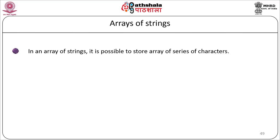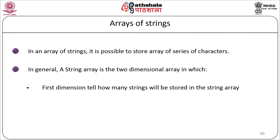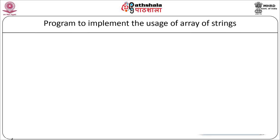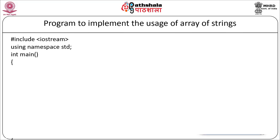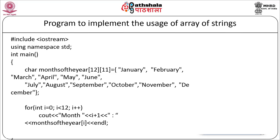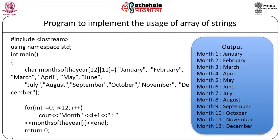Arrays of strings: it is possible to store an array of character sequences. A string array is a two-dimensional array where the first dimension tells how many strings will be stored and the second dimension tells how many characters each string holds. A program declares char months_of_year[12][11] and initializes it with January through December. A for loop prints each month: "month 1 is January", "month 2 is February", and so on.